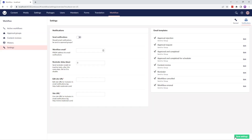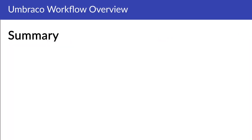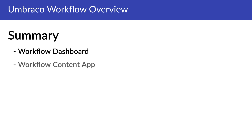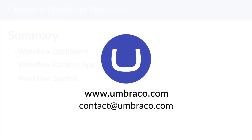And that's pretty much an overview of workflow. In this video, we've looked at the workflow user dashboard in the content section, workflow content app that's added to content nodes in the content section, and the workflow section consisting of the admin dashboard, active workflows admin view, approval groups, content reviews, workflow history, and the settings section. I hope you're quite excited to try out Umbraco Workflow. Watch out for more videos on workflow. Until then, take care and stay safe.